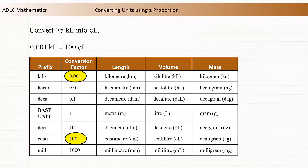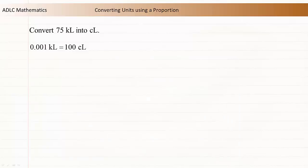0.001 kiloliters is equal to 100 centiliters. This strategy we're going to use involves a proportion. The proportion can be represented by two equal fractions, so let's rewrite the conversion ratio as a fraction equal to 1.